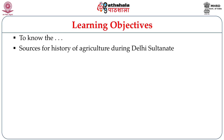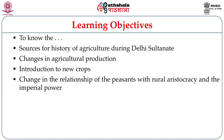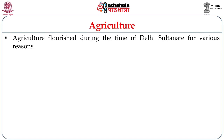In this module we are going to probe into the sources for the history of agriculture during the Delhi Sultanate, changes in the agrarian production during this period, the introduction of new crops, change in the relationship of the peasants with rural aristocracy and imperial power, and the changes in the terms of the rural aristocracy. Agriculture flourished during the period of Delhi Sultanate for various reasons.